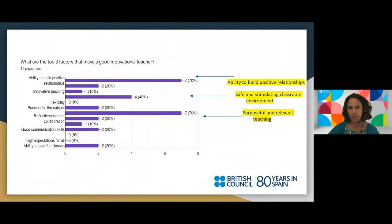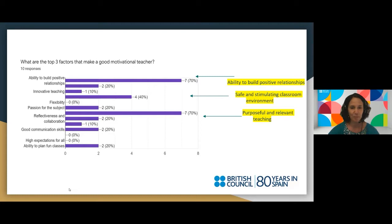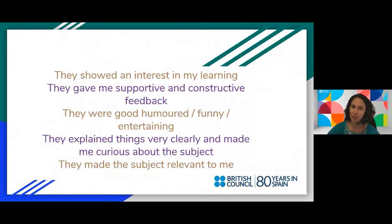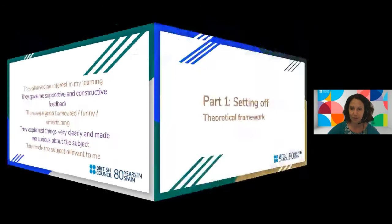When my colleague Gemma and I did a version of this talk with British Council teachers earlier in the year, we gave them a Google form and the top three factors that came out were: the ability to build positive relationships, to create a safe and stimulating classroom environment, and purposeful and relevant teaching. You might have noted that your motivating teacher showed interest in your learning, gave feedback, was good-humored, explained things clearly, and made the subject relevant.